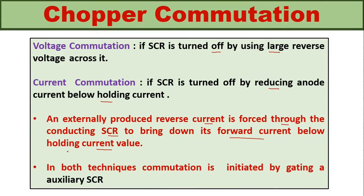In both techniques of commutation, the commutation is initiated by gating an auxiliary SCR. This means an auxiliary SCR is required in both voltage commutation and current commutation to establish the commutation process.